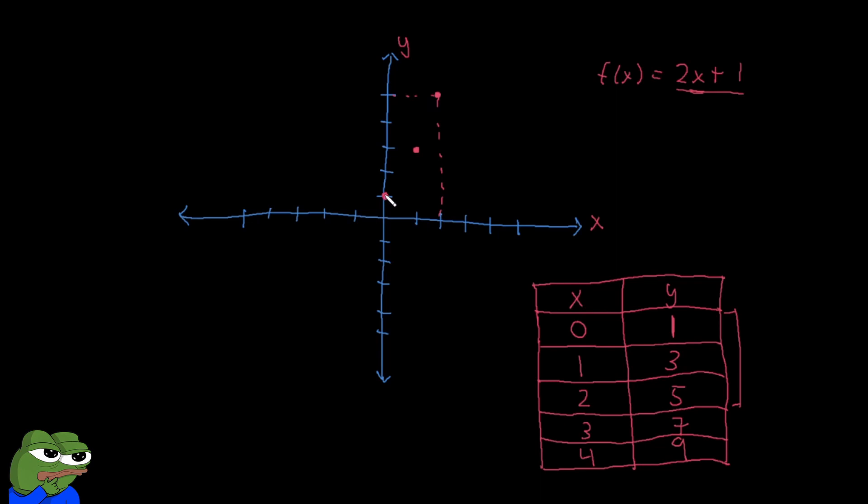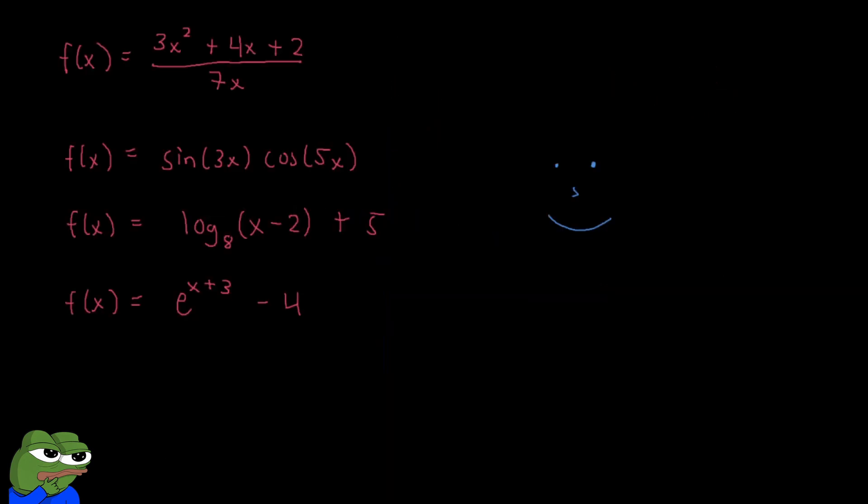And so our graph would kind of look like that. Okay. And this is the sketch of this function. Now, you can keep going with these other points. You'd need a bigger Cartesian plane for that. But that's essentially how it looks like. Okay. Hopefully now you have a better intuitive understanding of what functions essentially are and the very basics of it.